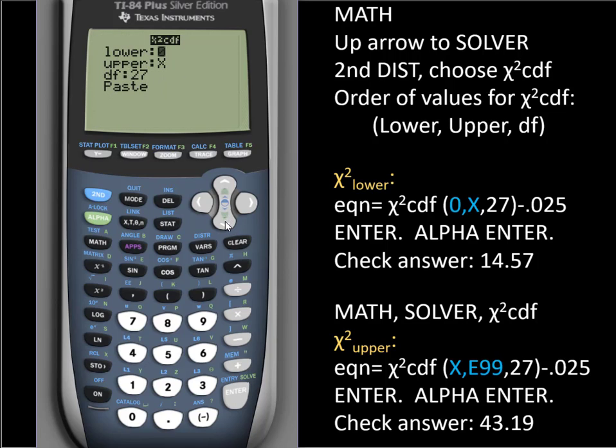Now, if you have a TI-83, then you won't see this wizard menu. You'll just see a chi-square CDF and an open parenthesis pasted back into the equation solver. You're going to enter the numbers in exactly the same order with commas between them.